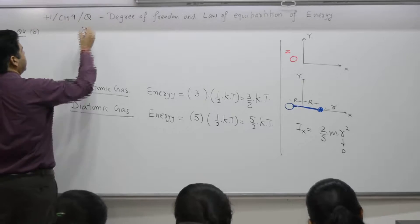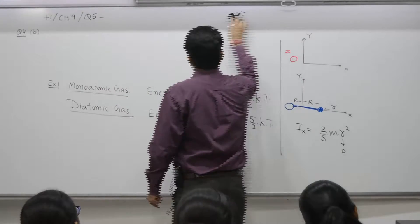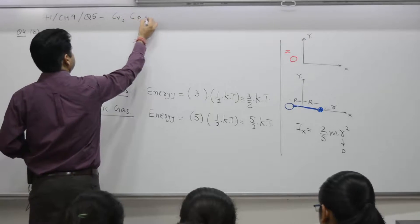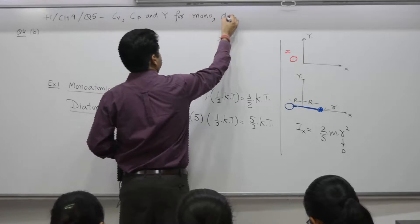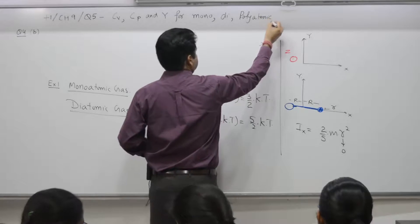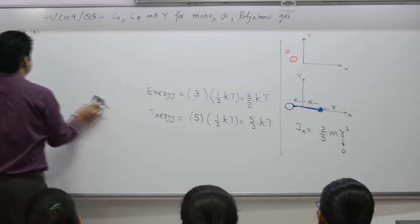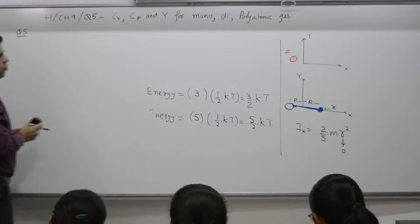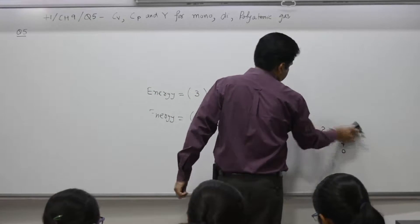Question number 5 deals with Cv, Cp, and gamma for monoatomic, diatomic, and polyatomic gases. Notes are closed — one full page.